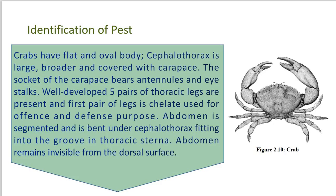The juveniles gradually migrate into shallow, less saline water in estuaries and rivers, where they grow and mature. Sexual maturity is attained at the age of 1 to 1.5 years after 18 to 20 larval moults. Males continue to moult and grow after attaining sexual maturity, but females cease to moult and grow when they mature and mate. The eggs hatch into zoea, zoea transform into juveniles, and juveniles show 18 to 20 moults to become an adult crab.